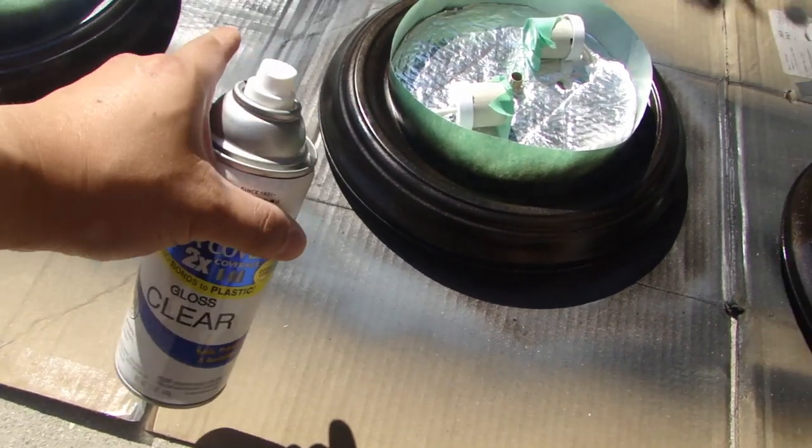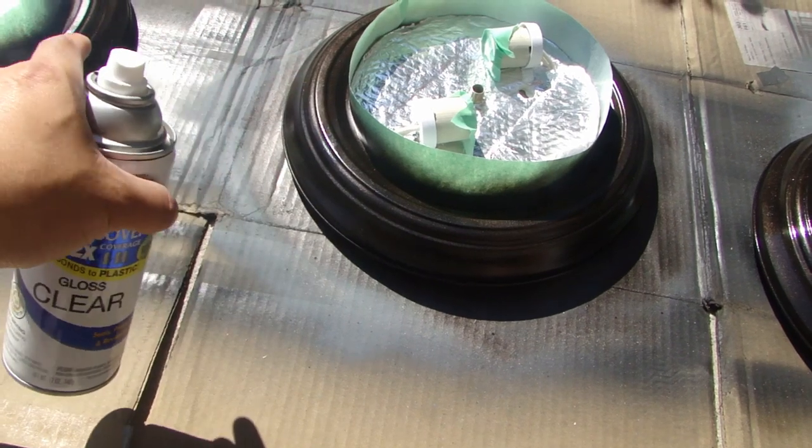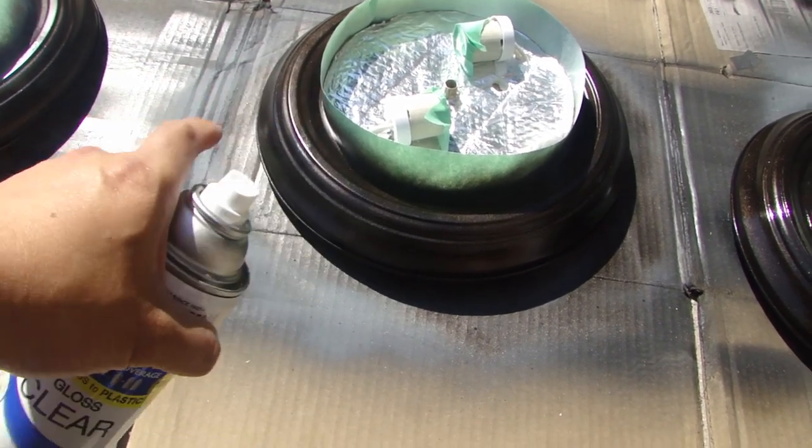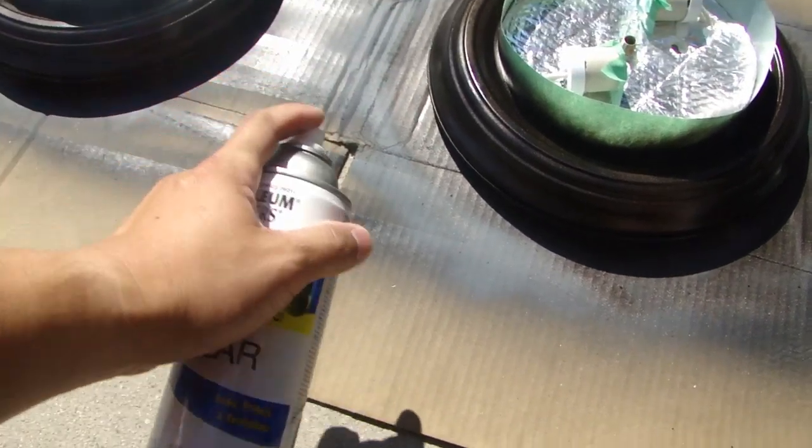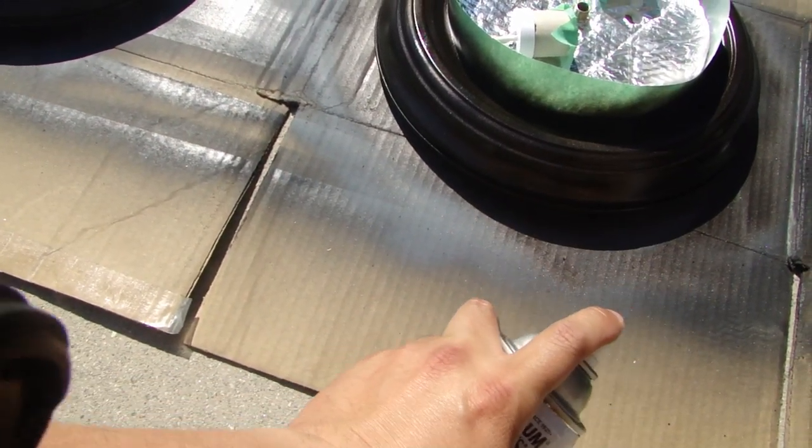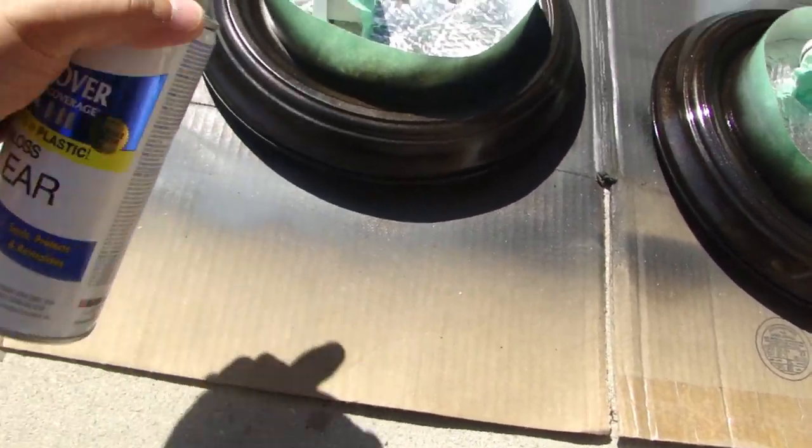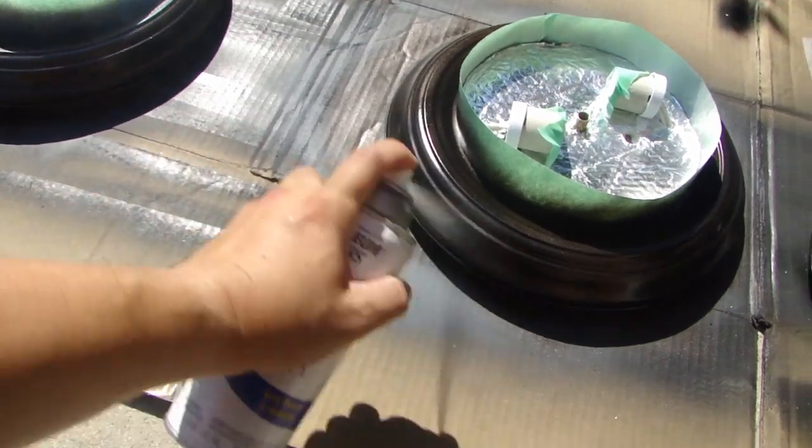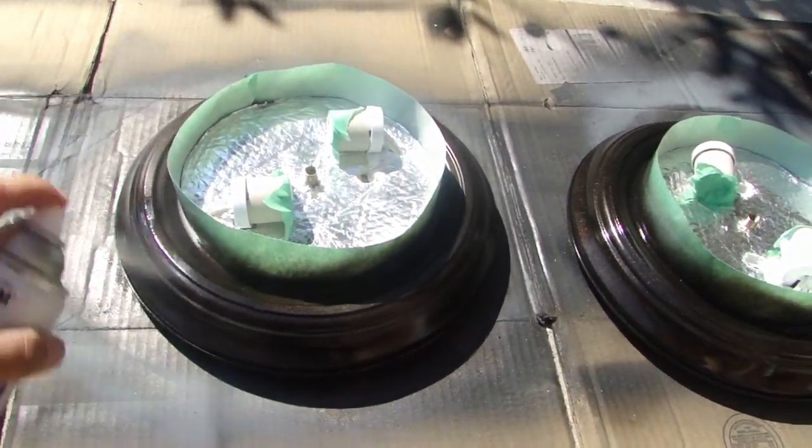But these are light fixtures. Once I put it up in the ceiling nobody's going to touch it, so I'm just going to use one base coat, one clear coat and it should be plenty. And same thing, just basically lightly cover all the surface.